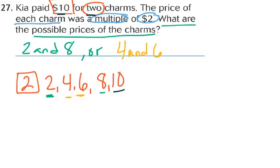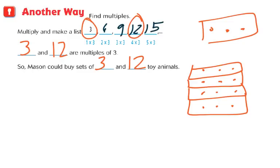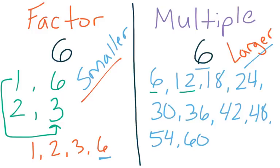We are all done with 5.4 — factors and multiples. The big takeaway is: factors are going to be smaller than or the same as the number we're given, and multiples are going to be larger or the number we're starting with. Both have that number in common, but our factors are smaller and our multiples are larger.